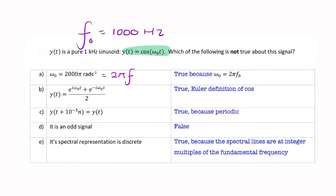So if you multiply 2 pi times 1,000, you get 2,000 pi radians per second. So that's true.